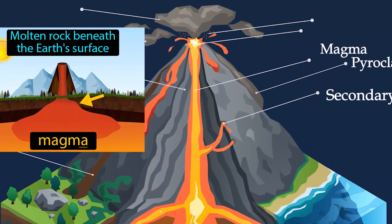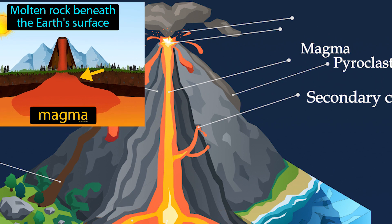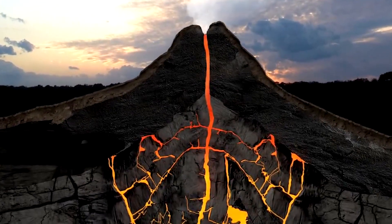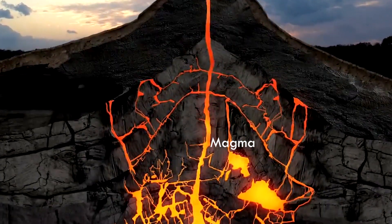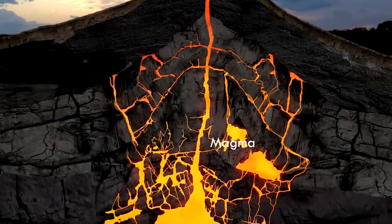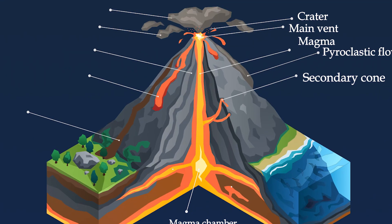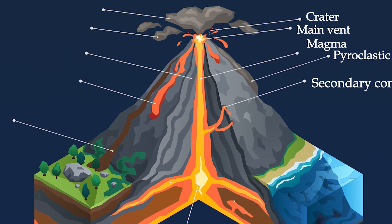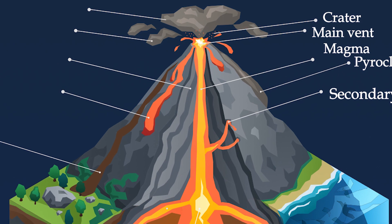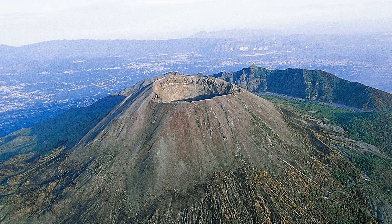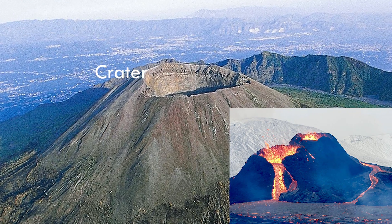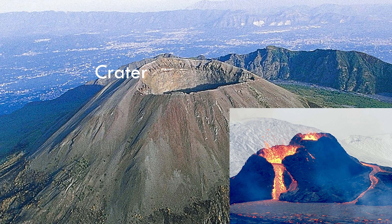Magma is molten rock beneath the surface of the Earth. It flows from the magma chamber to the main vent. The crater is a bowl-shaped geological formation at the top of a volcano. It is also the steep-sided walls made of hardened lava that surround the main vent.